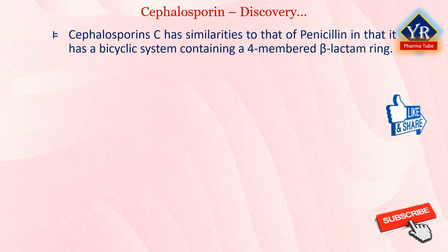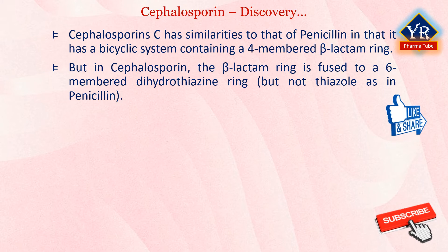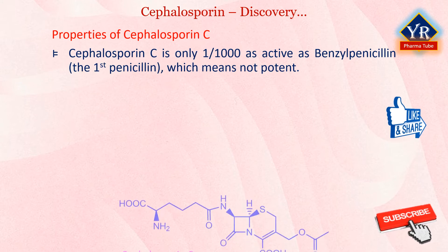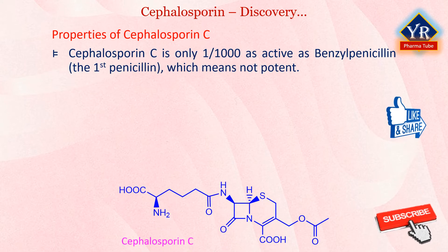The structure of Cephalosporin C has similarities to that of penicillin in that it has a bicyclic system containing a four-membered beta-lactam ring, but in cephalosporin the beta-lactam ring is fused to a six-membered dihydrothiazine ring. Nevertheless, cephalosporins are derived from the same biosynthetic precursors as penicillin, i.e., from cysteine and valine. Since Cephalosporin C is only one-thousandth as active as benzylpenicillin, it is not particularly potent, and its use is very limited.